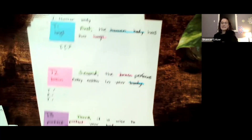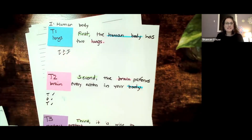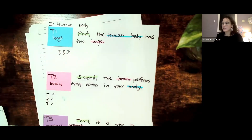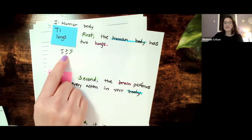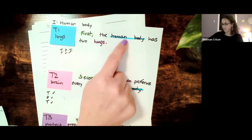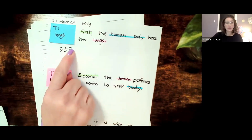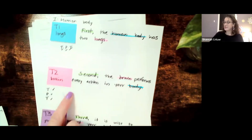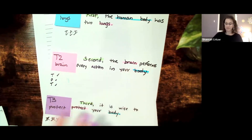What else did we learn? We learned about T sentences, right? Our topic one is about lungs. So we need to have three things for our T sentence: our transition word, we need to include our prompt — remember, our prompt is to write about the human body — and then the topic is lungs. So I made myself a checklist as I was going. I can highlight those words, make sure that they are included.